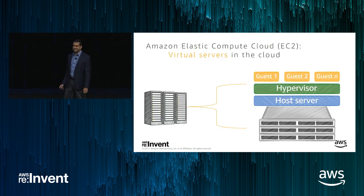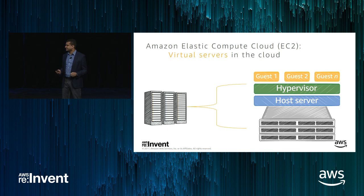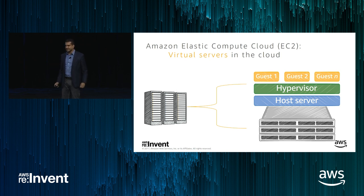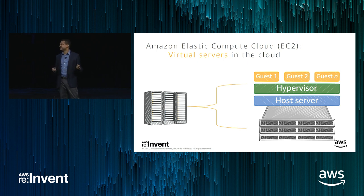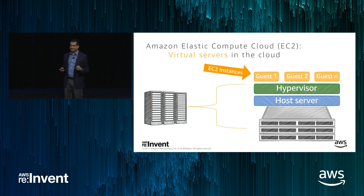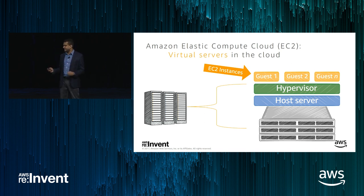So what is an EC2 instance? We have racks and servers all over the world — a lot of data centers, lots of AZs across lots of regions. Each rack has physical hosts that run hypervisors, which essentially carve up the servers into virtual machines. Each virtual machine has some CPU, some memory, some storage, and some network capability. We call these virtual machines EC2 instances — they are virtual servers in the cloud.